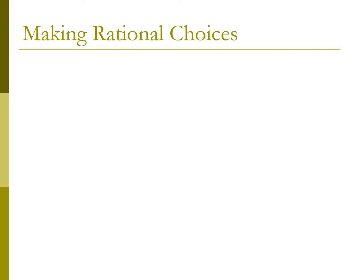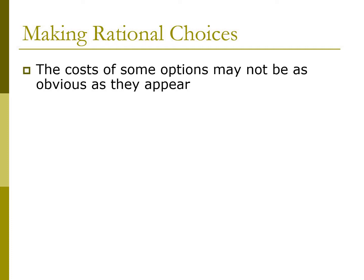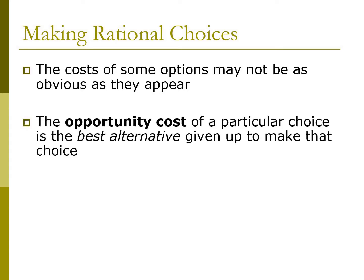If we want to make rational choices between two options, we might compare their costs and benefits, but the costs of some options may not be as obvious as they appear. For example, the cost of going to university is not just the tuition that you're paying — it's the time and salary you give up when you could have been working at a job. The opportunity cost of a particular choice is the best alternative that you need to give up to make that choice.